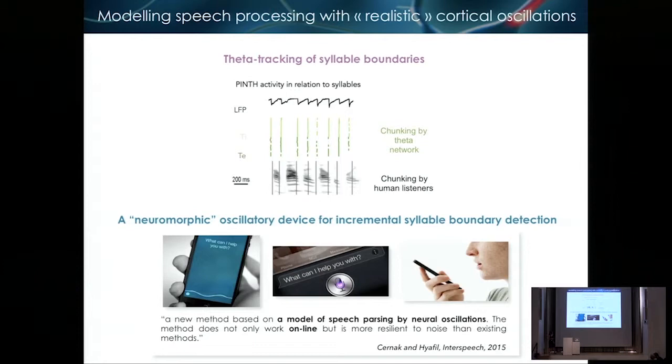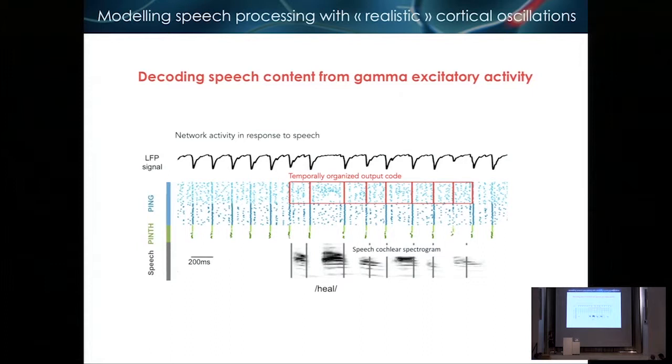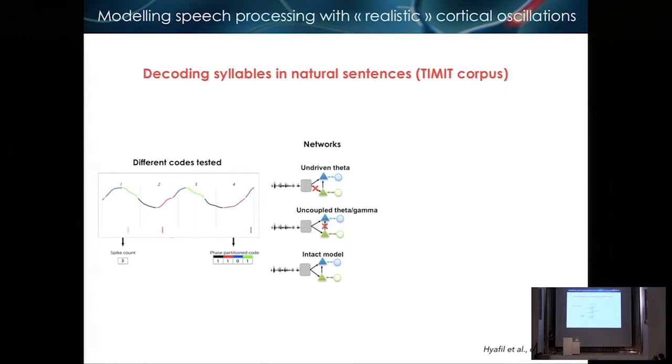And you see that at rest, we have spontaneous gamma activity, spontaneous theta. But when speech kicks in, everything gets more structured. The theta activity becomes clear, and then the gamma becomes informative. We wanted to first assess whether a theta oscillator built that way with some biological plausibility could really play a role in speech segmentation, syllable segmentation. So we compared the model, which is what we call a PINTH, in comparison with the PING for gamma, with some models that are more simple, just a simple acoustic boundary detector. And also, we compared it with a state-of-the-art algorithm for syllabification, which is the Mermelstein algorithm, which works offline.